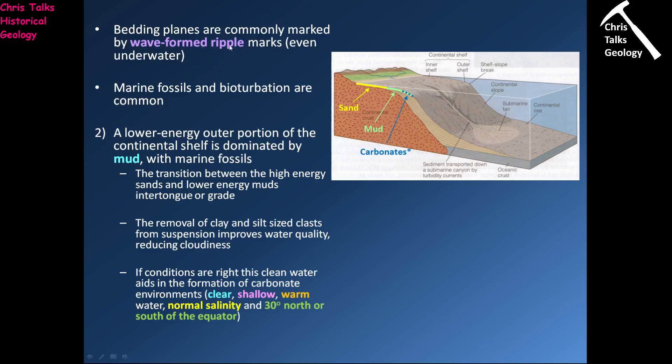The bedding planes between layers of rock formed in this system will typically have wave-formed ripples — symmetrical ripples — because the to-and-fro of the water produces a bidirectional current. This area will have lots of marine fossils and there will be lots of bioturbation, so we expect lots of burrows. Because this is such a high-energy area, lots of the marine fossils will show some degree of disarticulation — they'll be a bit broken up because they are pushed around by the water.